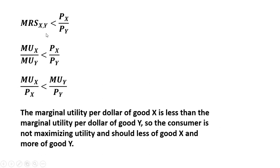One way to think about that: the marginal rate of substitution is the marginal utility of good x divided by the marginal utility of good y. So if the marginal rate of substitution is less than the price ratio, we can rearrange by dividing through by the price of good x and multiplying through by the marginal utility of good y to get a more familiar expression — the marginal utility per dollar spent on good x is less than the marginal utility per dollar spent on good y. We're getting less bang for the buck on good x and more on good y.